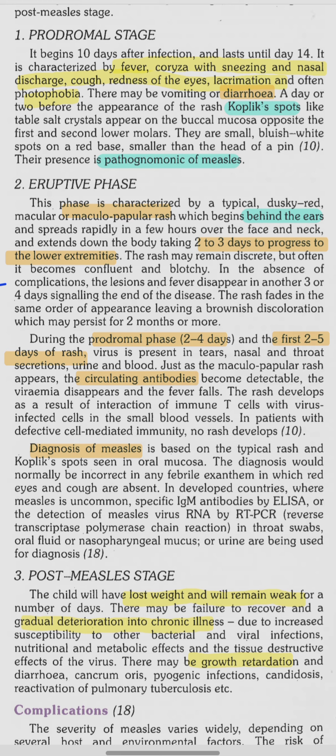Measles can be clinically diagnosed when Koplik's spots and the typical rash are seen. Laboratory diagnosis can also be done using ELISA or RT-PCR, using throat swabs, oral fluid, nasopharyngeal mucus, or urine.